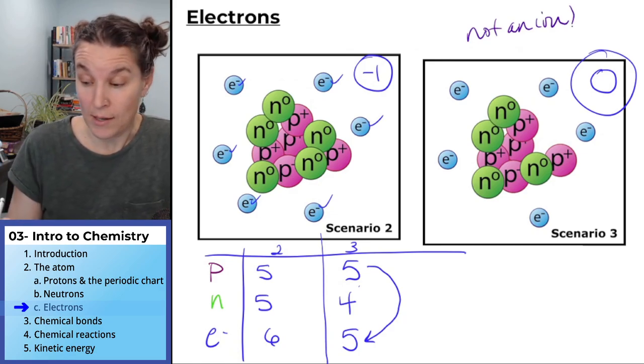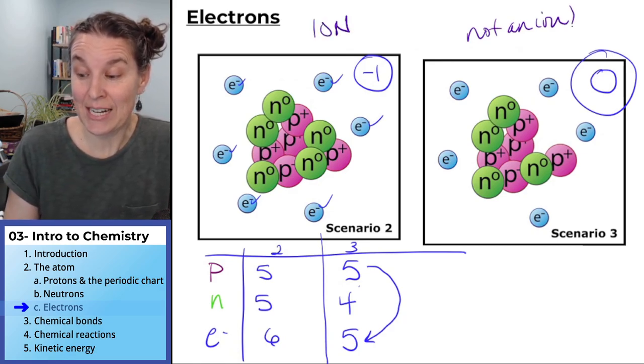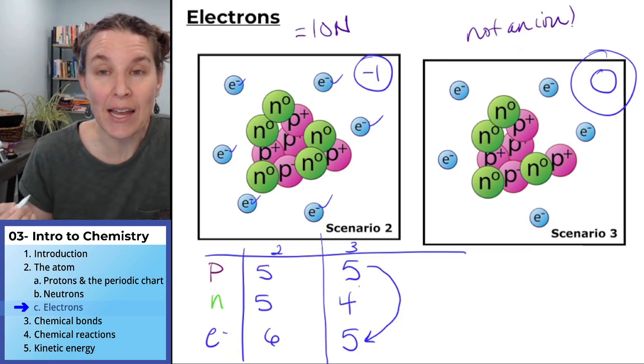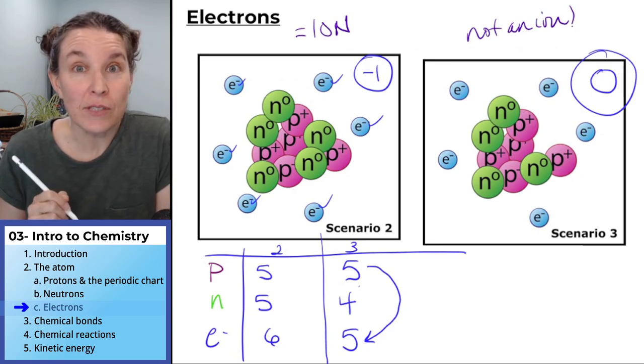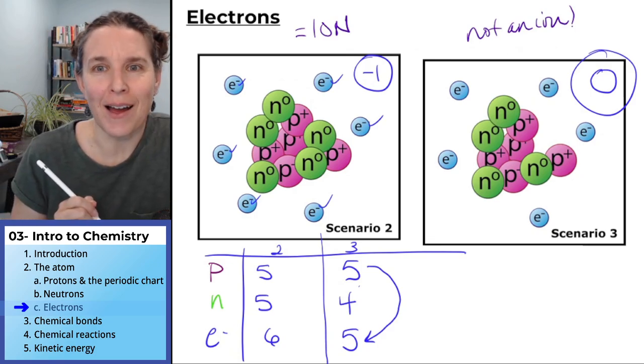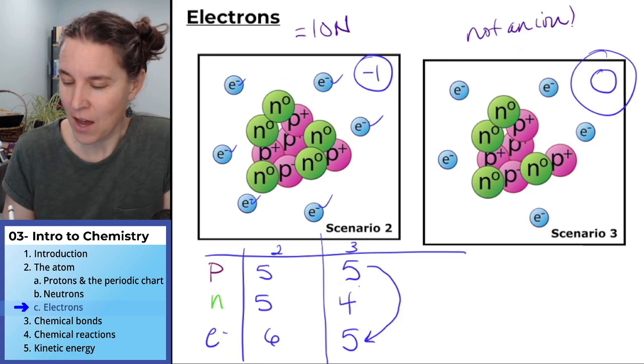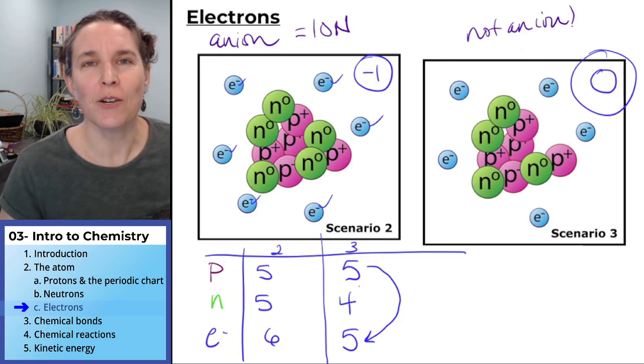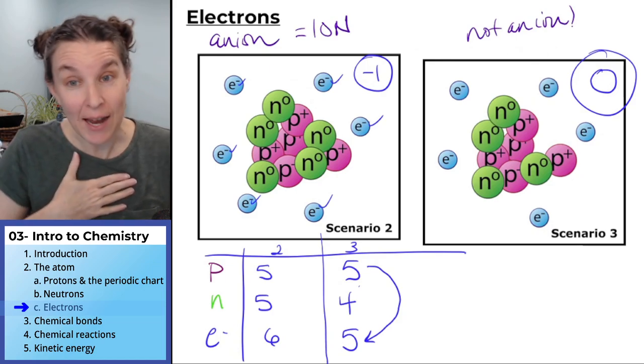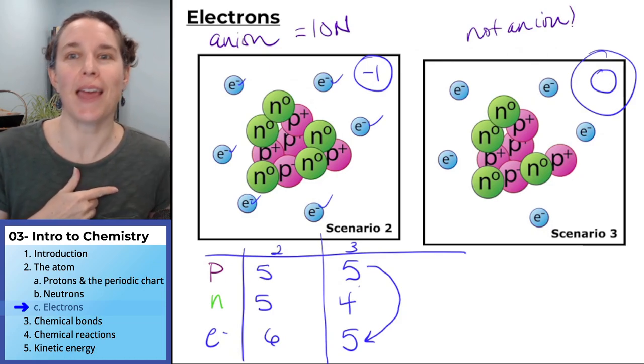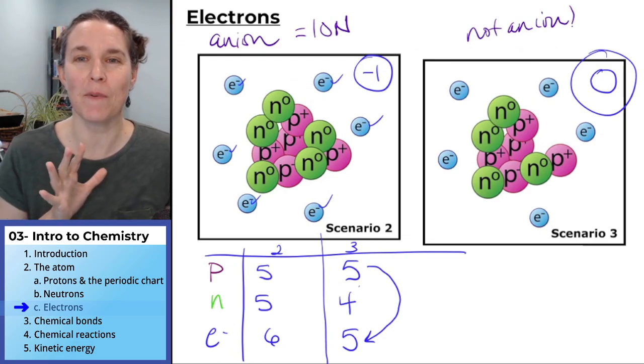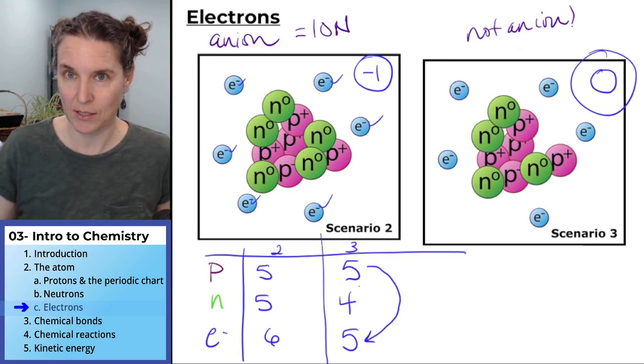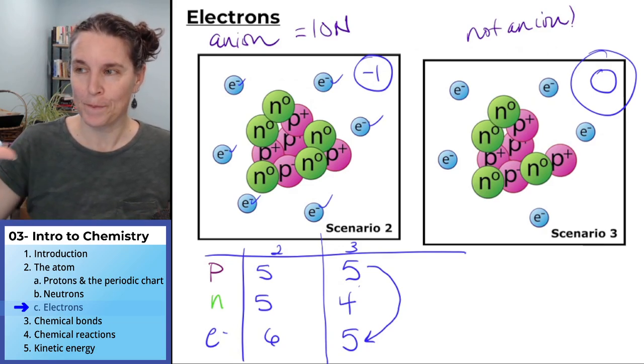Scenario two is an ion. And if a positively charged particle is a cation, a negatively charged particle is a dog ion. Just kidding. It's not. It's an anion. I don't know how you're going to remember that, but I would remember cation and then the opposite is an anion.